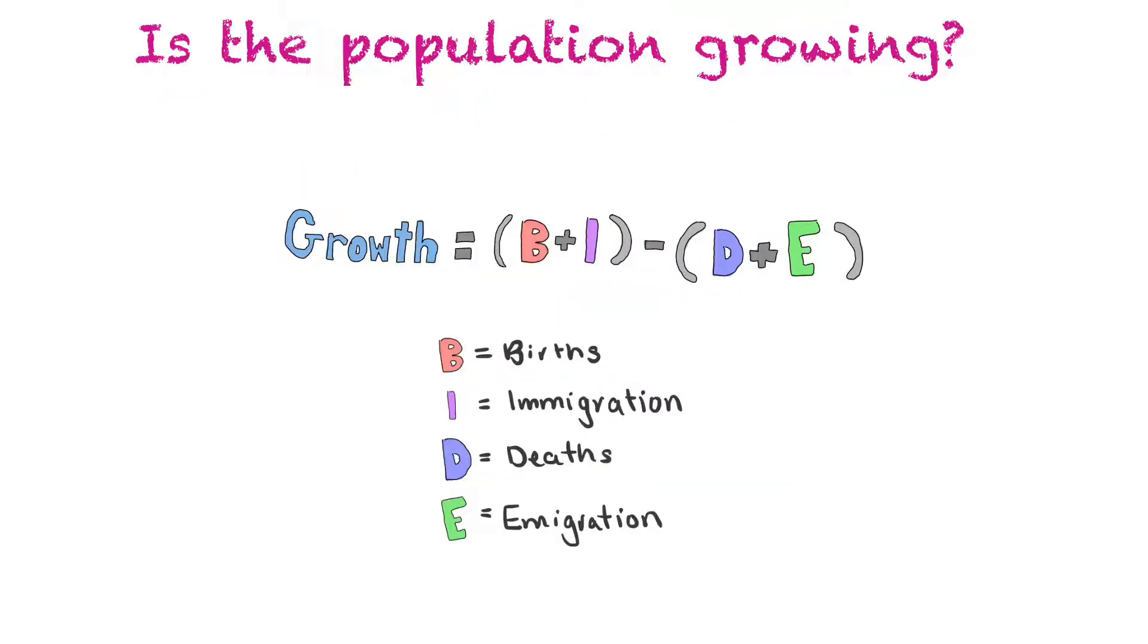If you know those four values you can determine whether a population is growing or not. So growth equals the sum of the births plus the immigrations subtracting the sum of the deaths and the emigration. If that value is positive then the population is growing by that number. If it's a negative number it is shrinking by that number. And if the value is zero then there's neither any growth or loss.